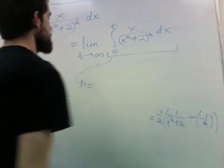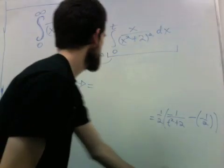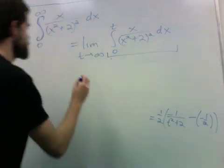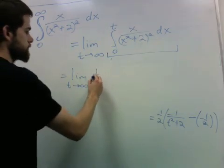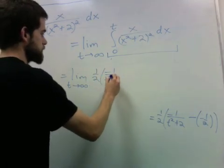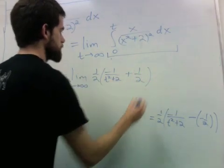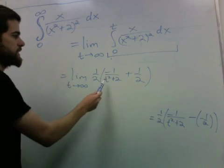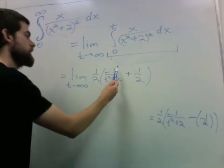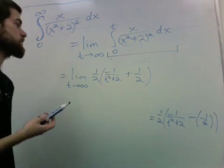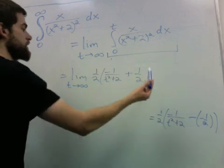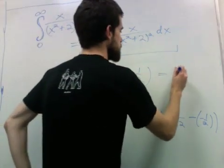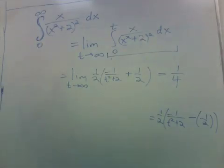So now we need to know, does the limit of this exist? So we look at this: as t goes to infinity, this goes to infinity, we have one over infinity which goes to zero, and one tenth doesn't do anything. So we get one tenth, so the original integral converges to one tenth.